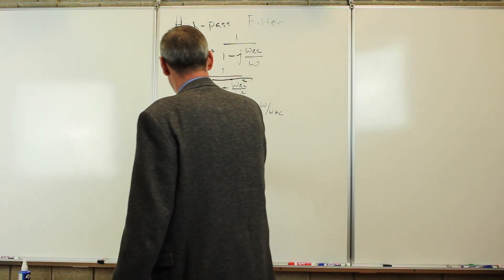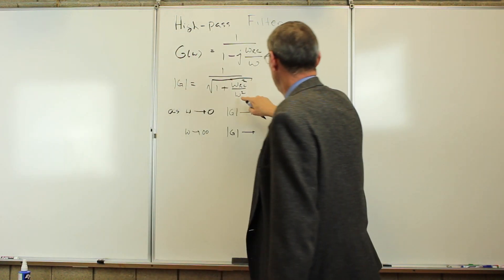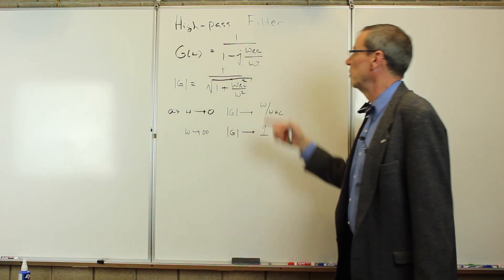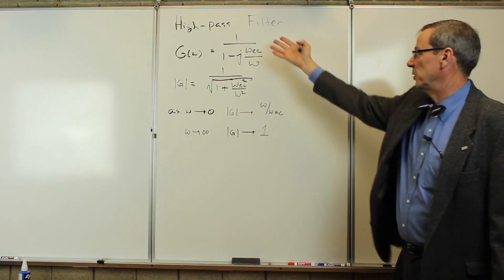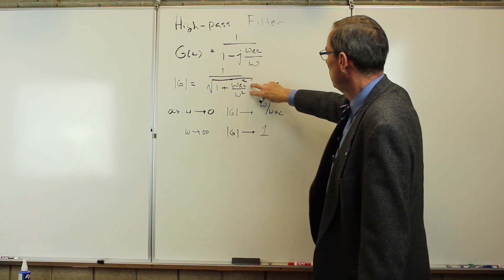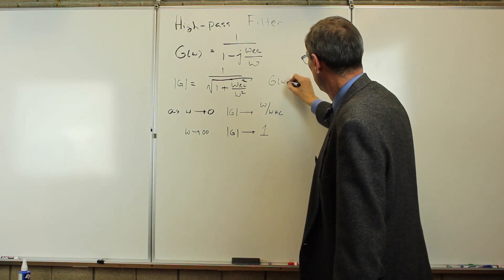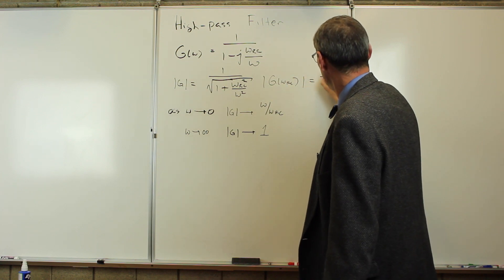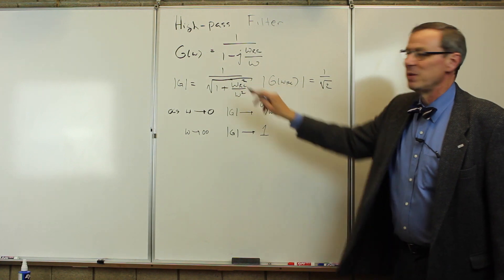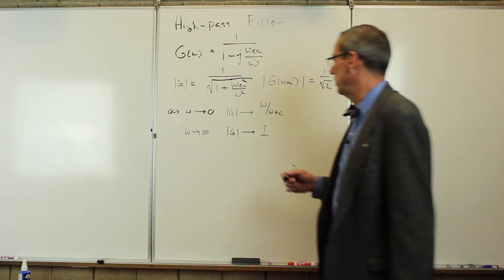How about high frequencies? Omega goes large. Now, if omega is large, this term basically goes to 0 and the gain just goes to 1. So it's just the opposite of the low-pass filter. It lets high frequencies through and cuts off low frequencies. And when the two frequencies are the same, the gain of omega RC is going to be 1 over square root of 2. So the 3 dB point is going to be at that characteristic frequency just like it was for the low-pass filter.